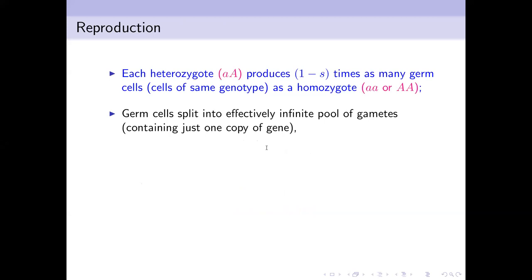We model fitness using relative fitness: purebreds (little a / little a and capital A / capital A) have relative fitness 1, while hybrids (heterozygotes) have relative fitness 1−s. During reproduction, each plant produces enormous numbers of germ cells carrying the same genotype, which split into gametes carrying one copy of each gene. The relative fitness says heterozygotes produce (1−s) times as many germ cells as homozygotes.